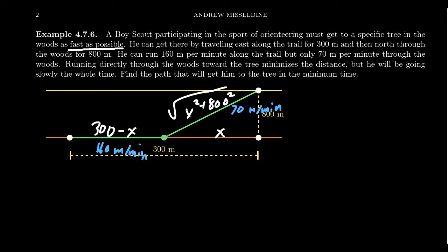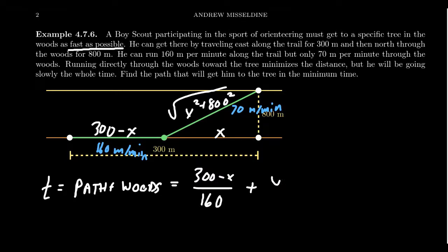What's the optimal solution? Well, it's going to be very similar to before. Time will equal the time he spends on the trail plus the time he spends in the woods. The time he spends along the trail will be (300 - x) meters divided by 160 meters per minute—that would give us minutes. And then the time he spends in the woods will take the square root of x² + 800² all over 70.